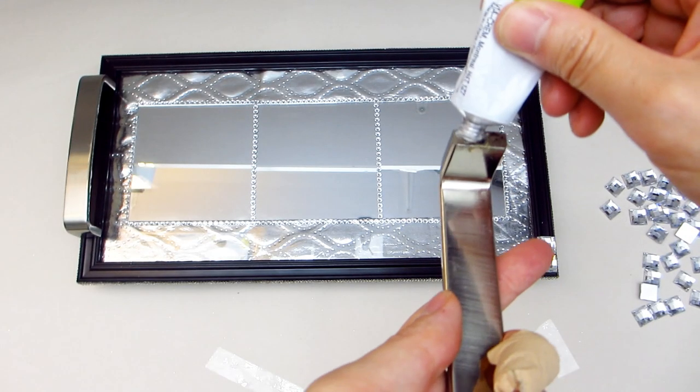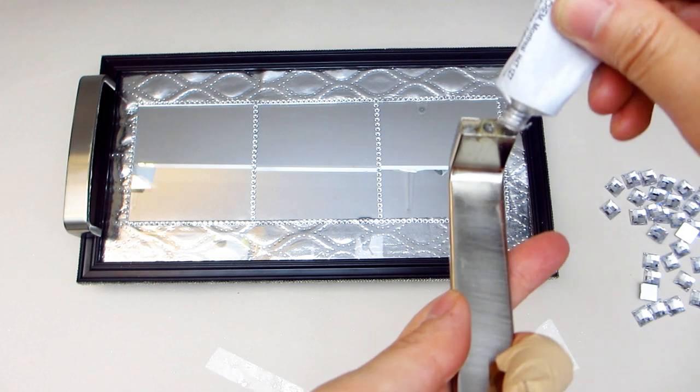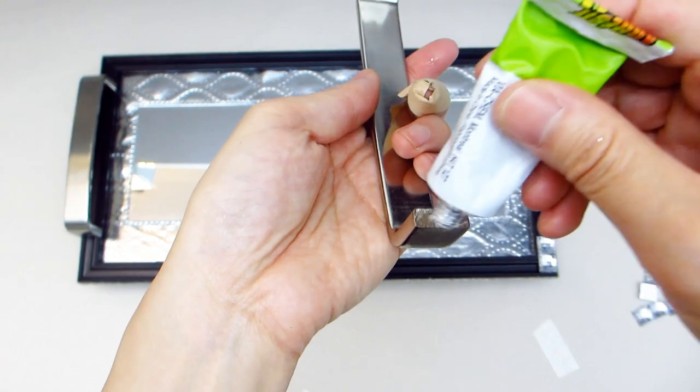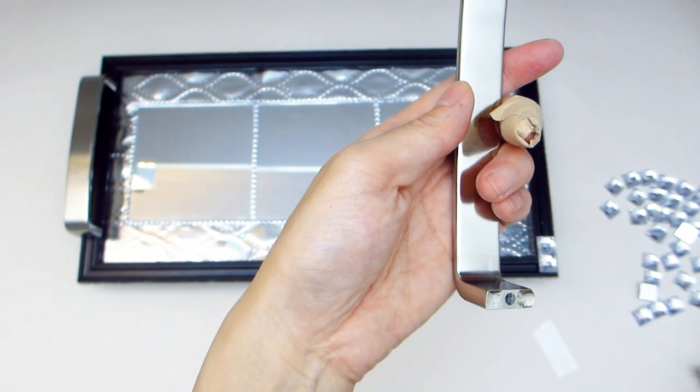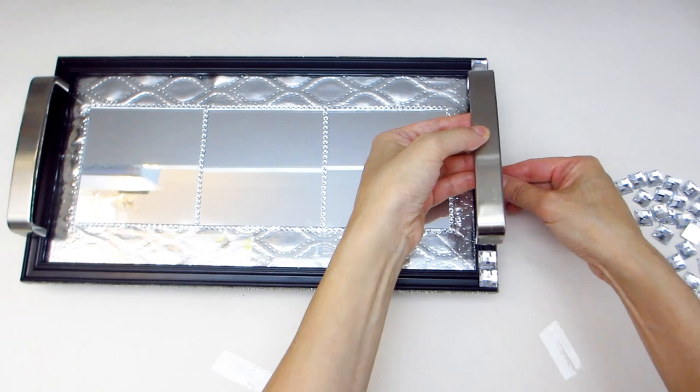Take one of the handles and position it onto the frame. Once you are satisfied with the placement, secure it to the frame with some fix-all. Using fix-all will provide a firmer, longer lasting hold, just in case you are carrying something heavy on the tray.